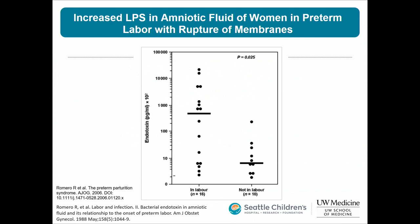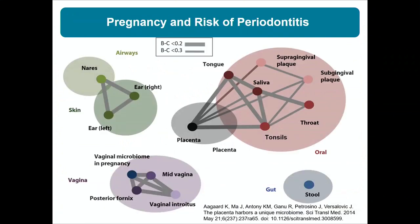One of many studies looked at pregnant individuals with ruptured membranes and compared those with contractions (preterm labor) versus those without. In the amniotic fluid of those with preterm labor, there were much higher rates of lipopolysaccharide — bacterial endotoxin, a component of the gram-negative cell membrane — suggesting infection is part of the preterm birth pathway.